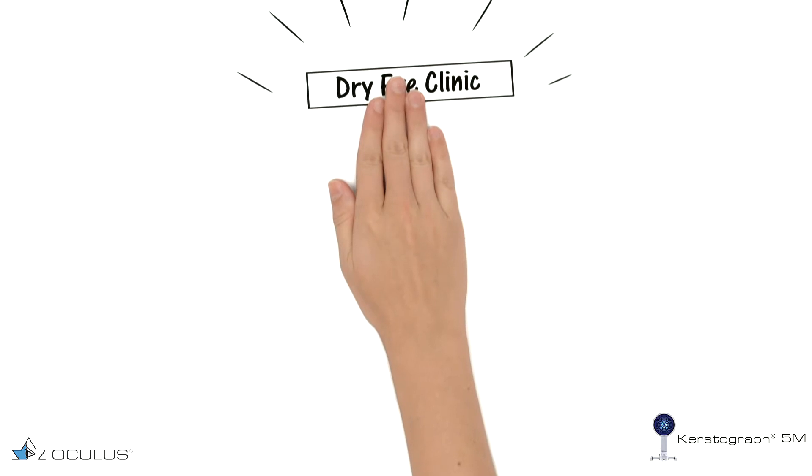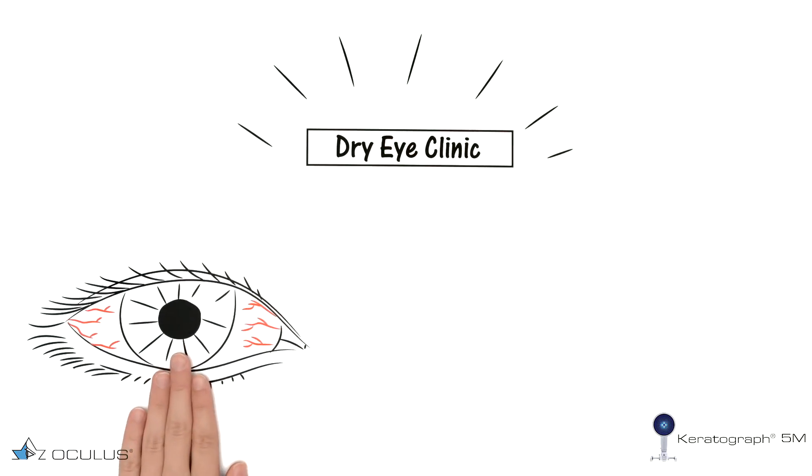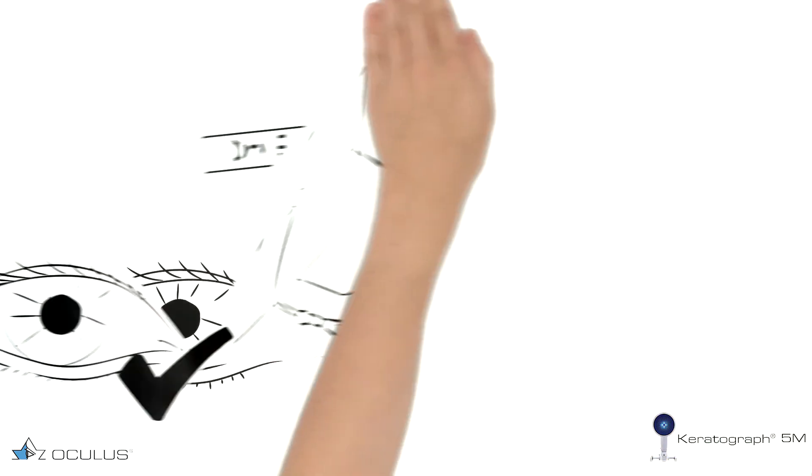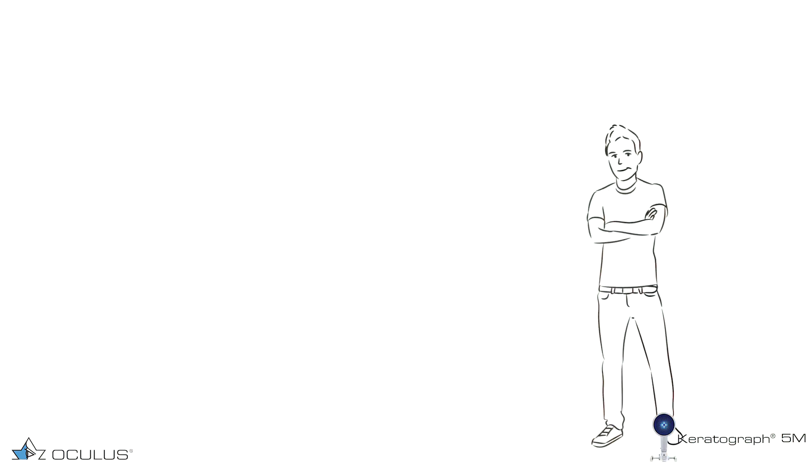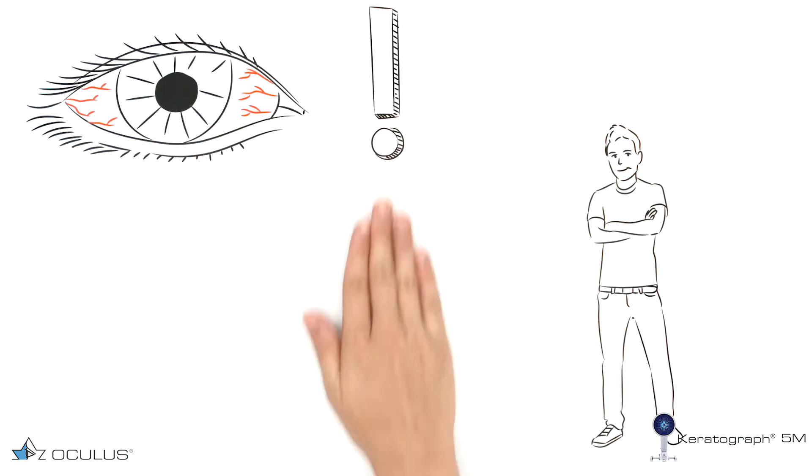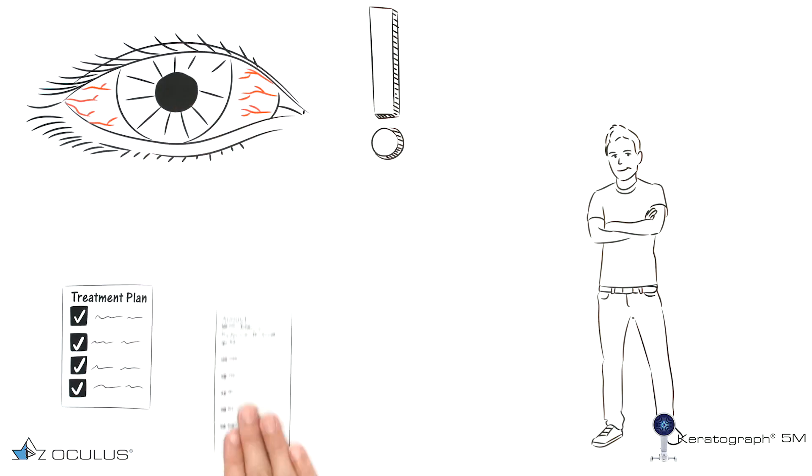However, a successful dry eye clinic requires more than looking for and diagnosing the syndrome. Dry eye treatment starts with patient education. Without it, patients will not be easily convinced that dry eye syndrome is something that they need to take seriously and that requires a treatment plan with regular visits to a specialist.